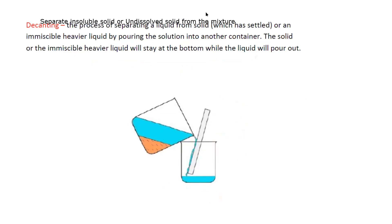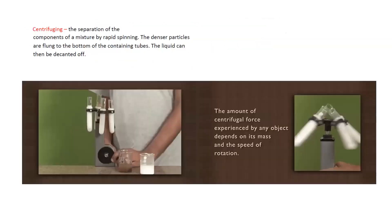Decanting can also be used to separate the insoluble solid or the extra solid from the mixture, but in this case we pour the liquid out. It is a fast process but it is not 100% accurate as compared to filtration. Filtration will take time but it is an accurate process.